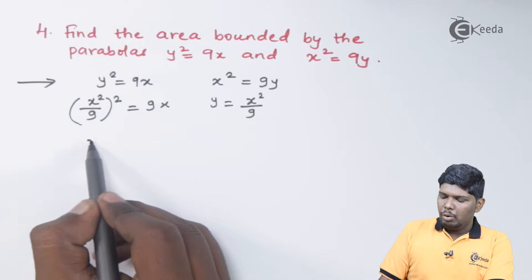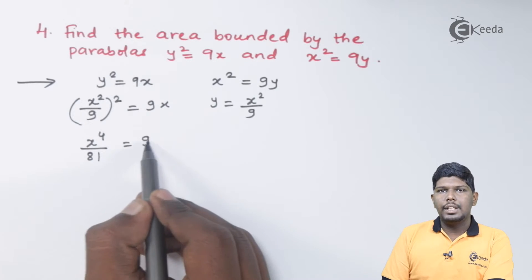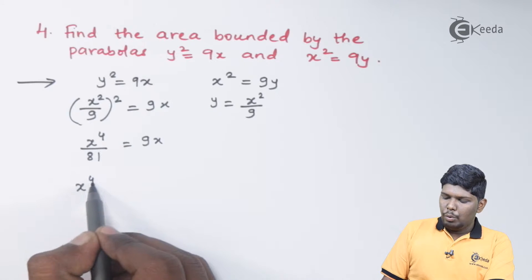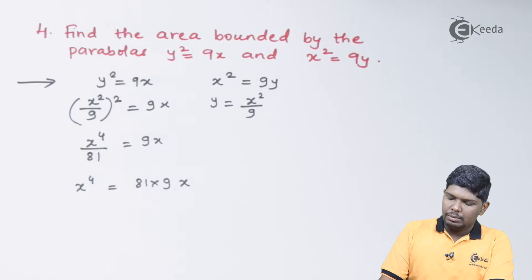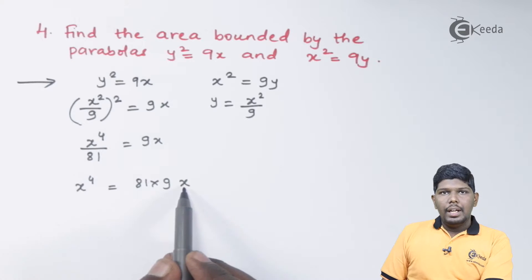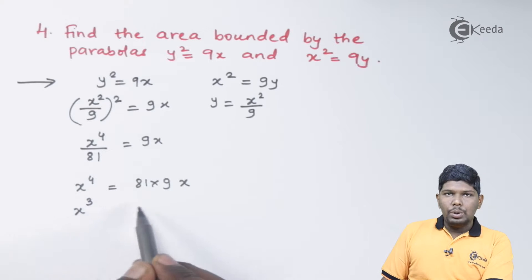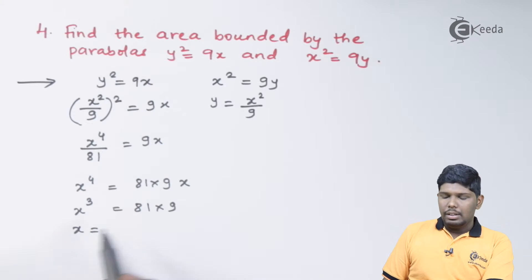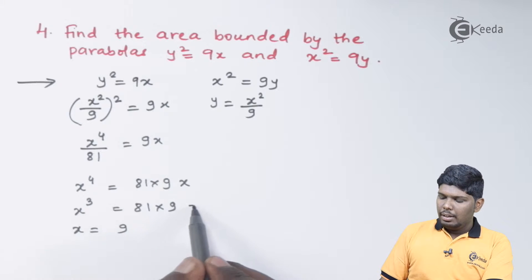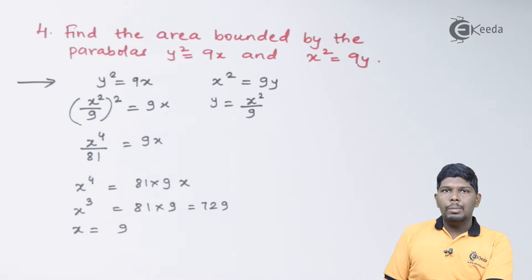x² the whole square will give you x raise to 4, and 9 square is 81. On further solving, we have x raise to 4 as 81 times 9 times x. If I divide by x on both sides, this will give you x raise to 3 equals 81 times 9, and on further taking cube root, the value of x will be 9, as 81 times 9 will give you 729 and its cube root will be 9.